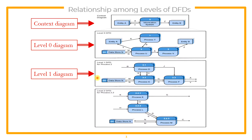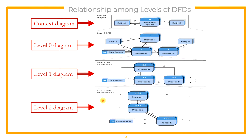Then we have Level 1 Diagram, which is also an explosion of Diagram 0. And Level 2 is an explosion of a specific process in Diagram 0 — that's why we have numbers such as 2.1, 2.2, and 2.3, because this is only the explosion of Process 2. Level 2 is the Child Diagram of 2.2, so the numbers are 2.21, 2.22, and so on and so forth.